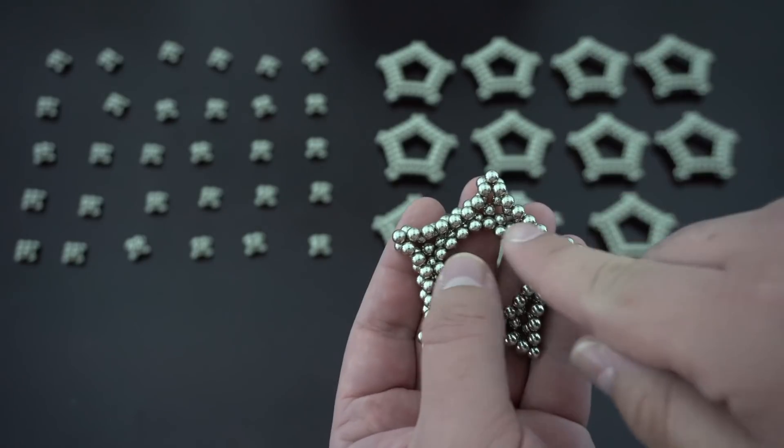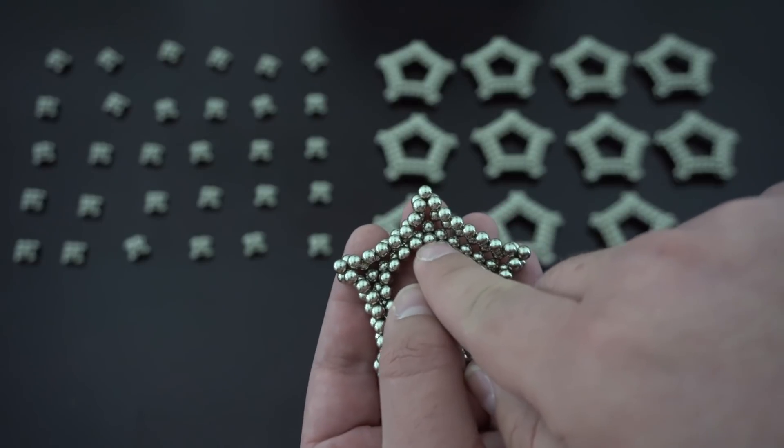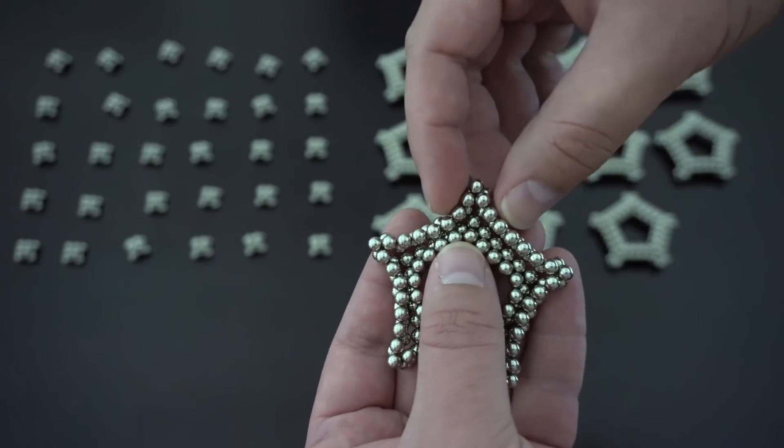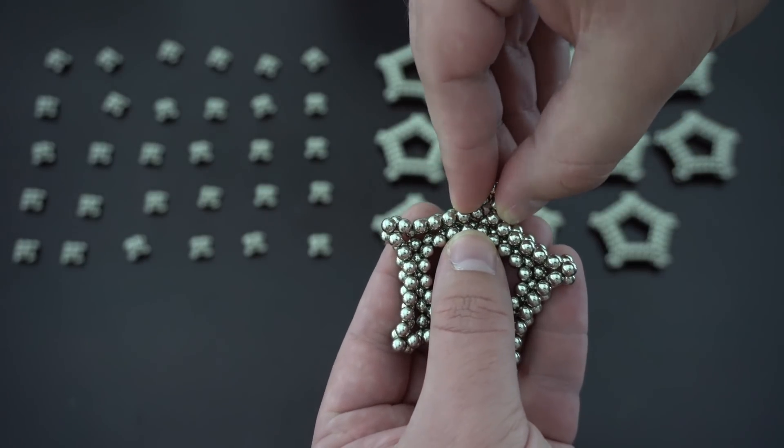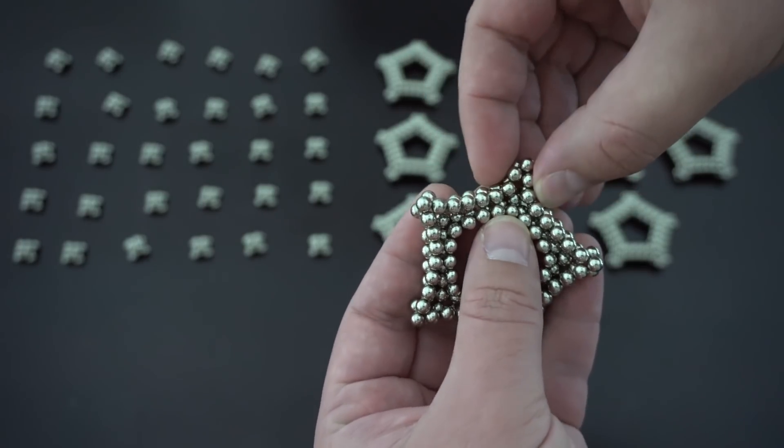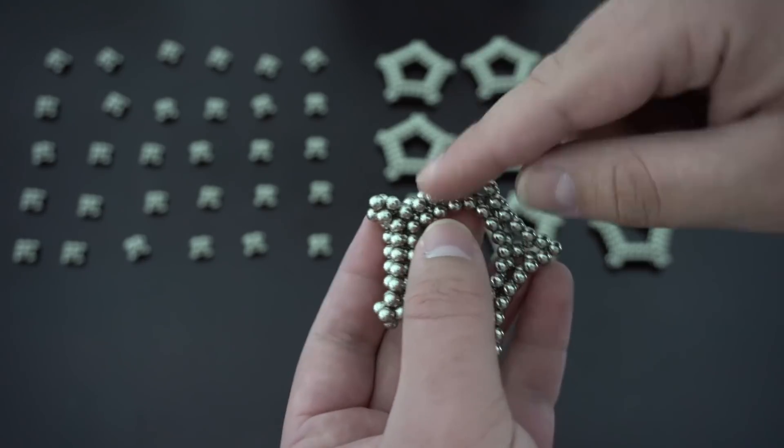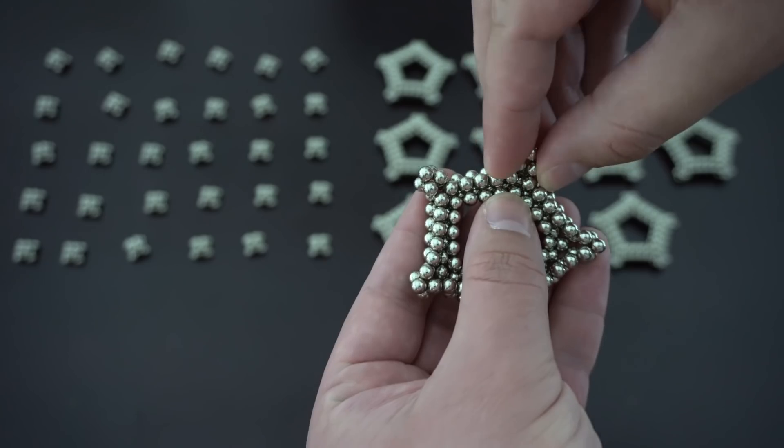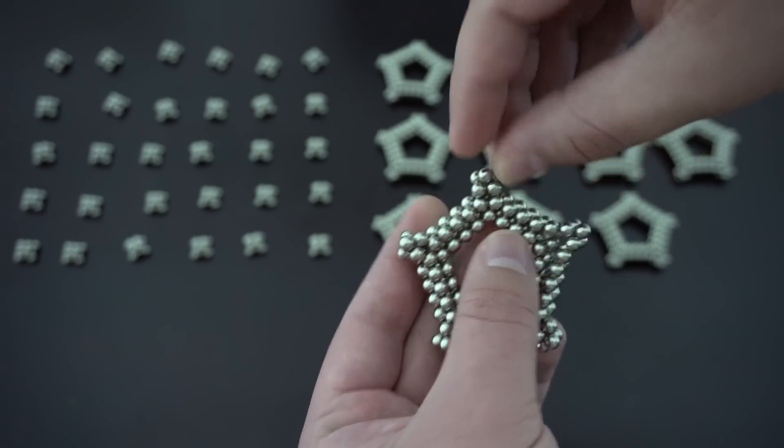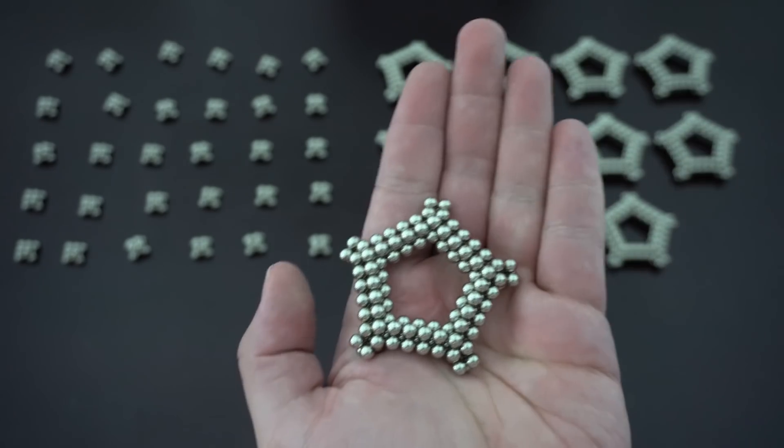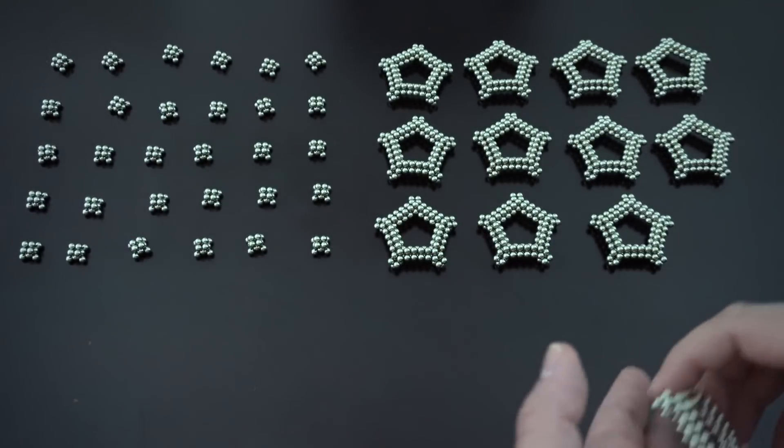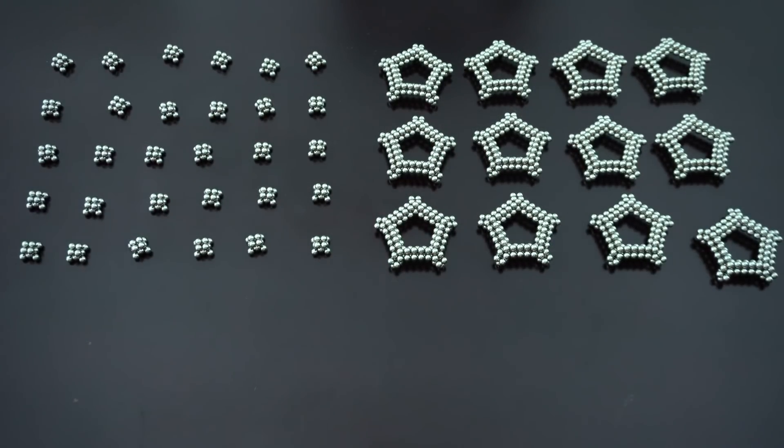Now flip it over and you'll see that these sides are still open. This magnet there, that one, and that one need to come together like that. Now do that to the other four, and that's how you make this subunit.